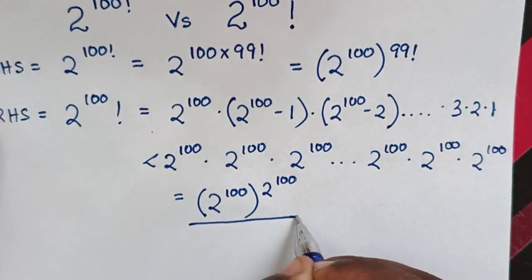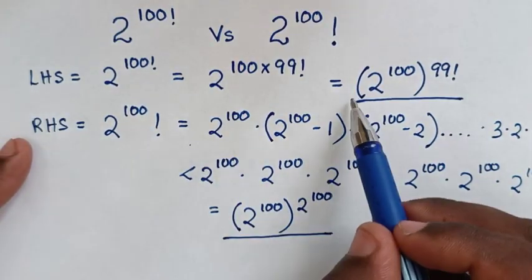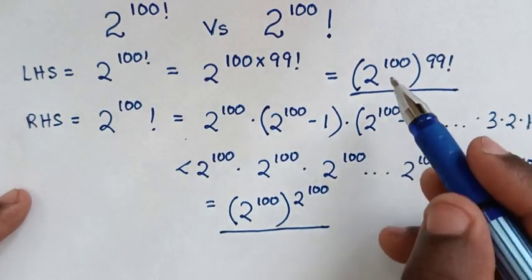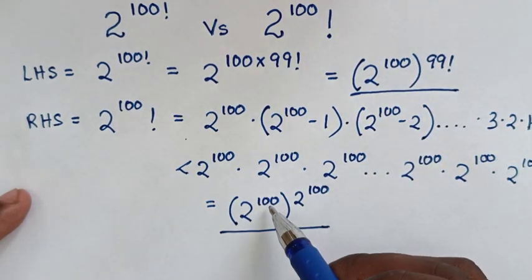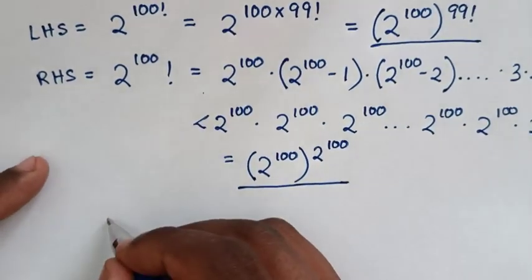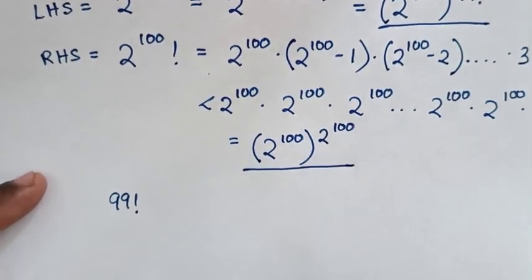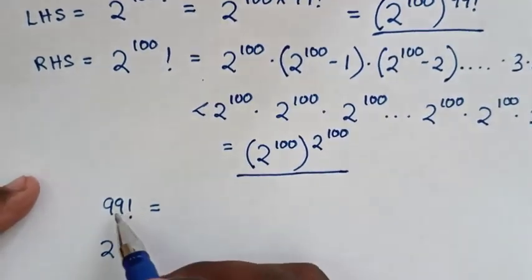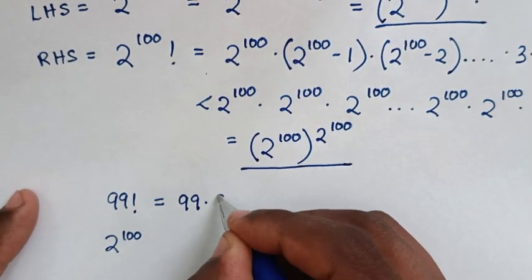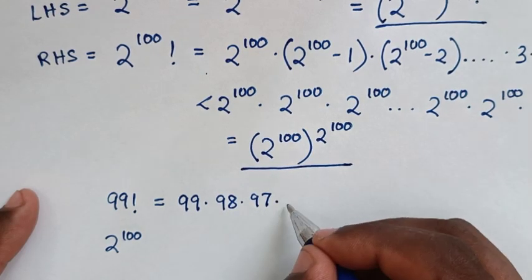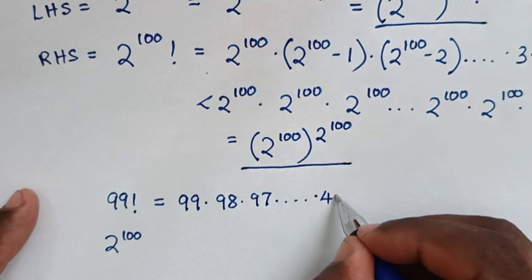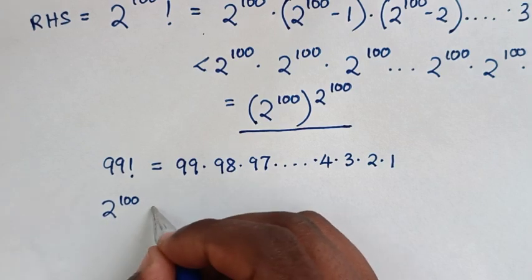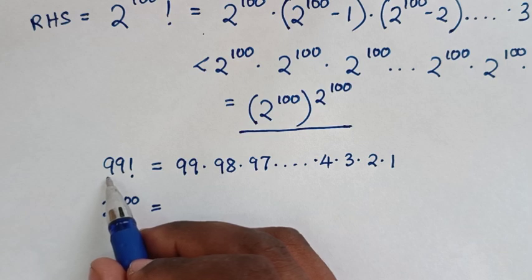We compare the left-hand side with the right-hand side. Both have the same base of 2 to the power of 100, so we compare the exponents: 99 factorial on the left versus 2 to the power of 100 on the right. Here, 99 factorial equals 99 times 98 times 97 times 96, up to times 3, times 2, times 1.